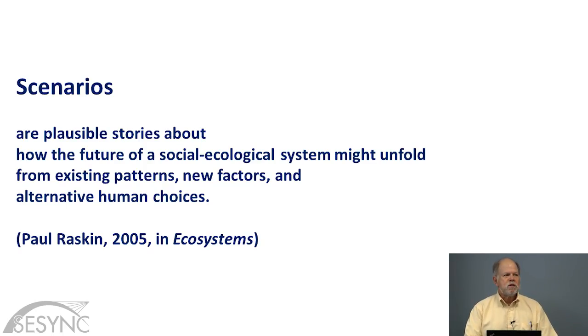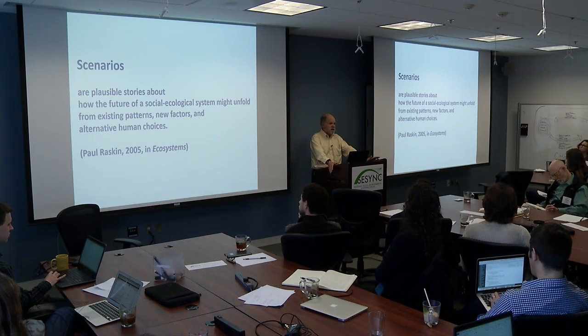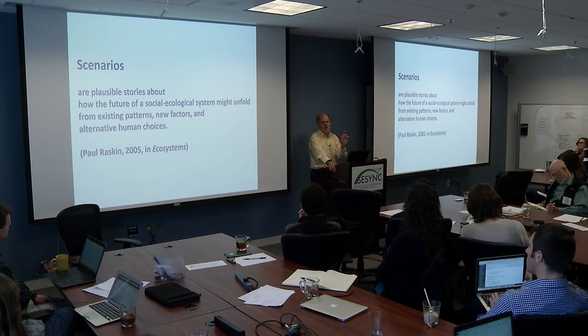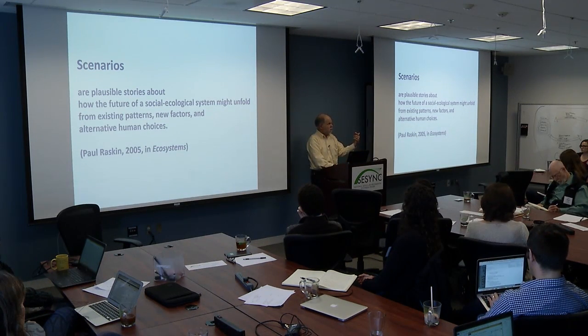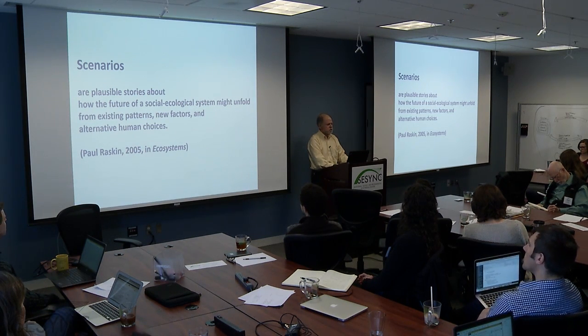About that time, I got interested in an approach called scenarios, which I'll talk about more tomorrow. Scenarios are just one of many ways of organizing thinking in the back loop. I'm using a very particular definition — a set of plausible stories: multiple stories about how the future of a social ecological system might unfold from existing patterns, new factors, and human volition, alternative choices that people may make. Paul Raskin is one of the pioneers of scenario thinking, and he wrote an overview paper of the state of the art of scenarios in ecosystems in 2005.